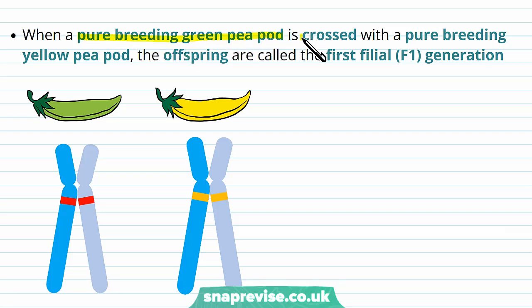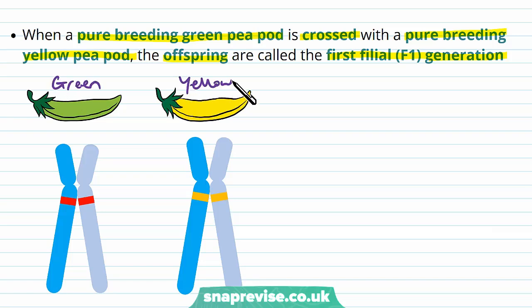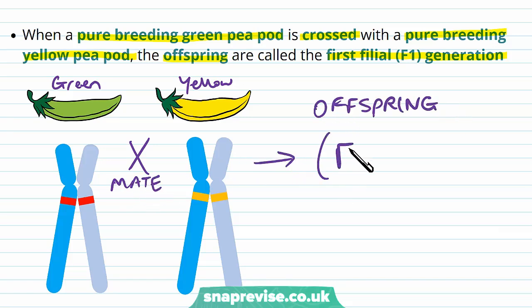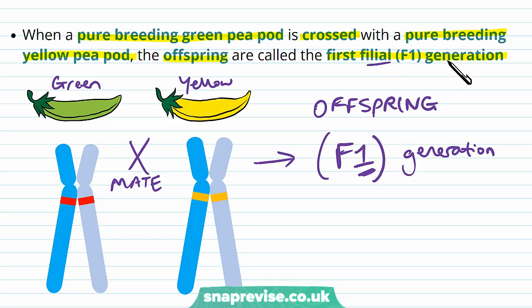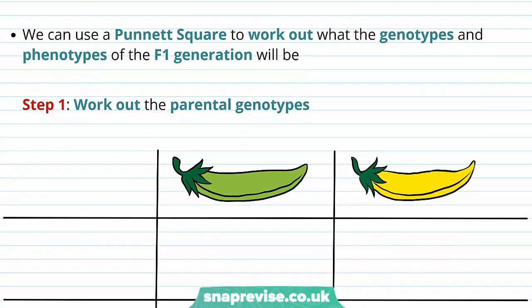When a pure-breeding green pea pod is crossed or mated with a pure-breeding yellow pea pod, the offspring are known as the first filial or F1 generation. So we're taking the green pea pod and the yellow pea pod and mating them together to make offspring. Filial just means generation in Latin, or offspring. And we can use something called a Punnett square to work out the genotypes and phenotypes of this new F1 generation.